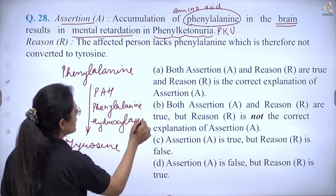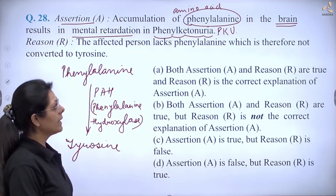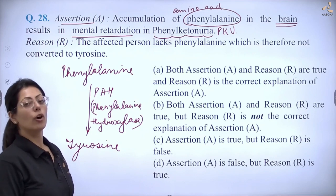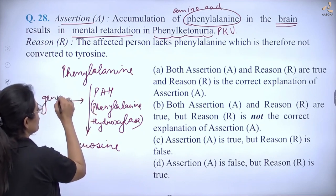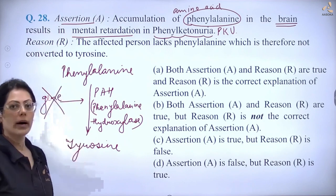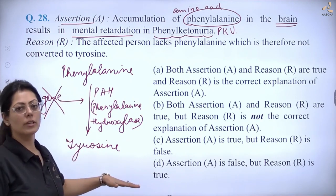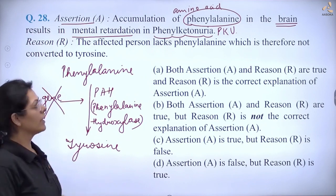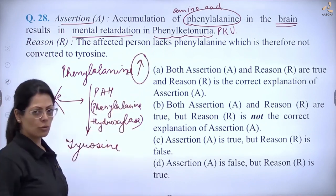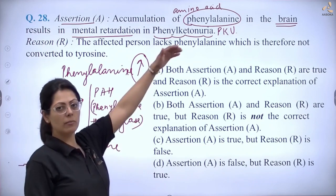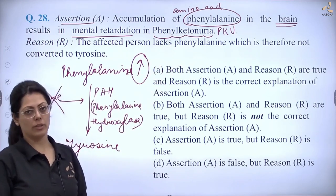This PAH enzyme needs to carry out this reaction. But in the case of phenylketonuria, what happens is phenylalanine conversion stops because the enzyme does not work. So the amount of phenylalanine increases in the body, and when it accumulates in the brain, it causes mental retardation.